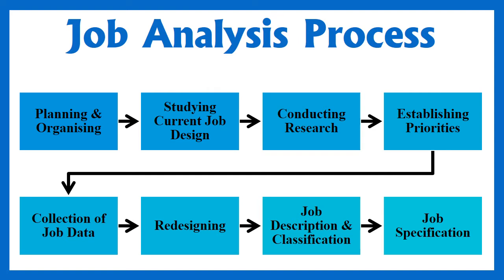If necessary, the job should be redesigned. The next step is preparing a job description and classification: the collected job information is processed and a job description form is prepared — a statement showing full details of the job activities. Finally, job specification is also prepared from the collected information — a statement of minimum acceptable qualities for the person to be placed on a particular job, specifying the standard by which those qualities are measured.